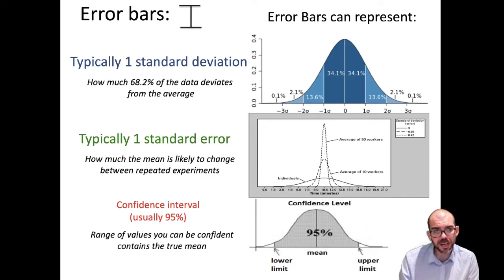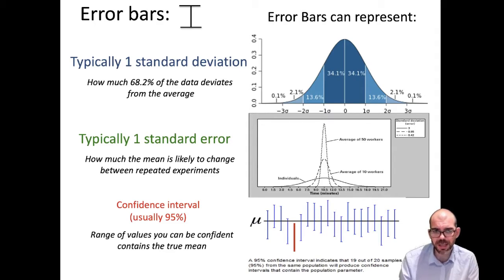You can see in this graph here that as I get more and more data in my experiment, I am getting closer and closer to representing the average. Or it can represent a confidence interval. A confidence interval is just how confident you can be that your data contains the true mean. Here's another way of thinking about that. With this graphic, the U is the mean. Each line is a different data set. I can be 95% confident here that this data is going to represent the mean because 19 out of 20 of my data samples do contain the mean in the data set.